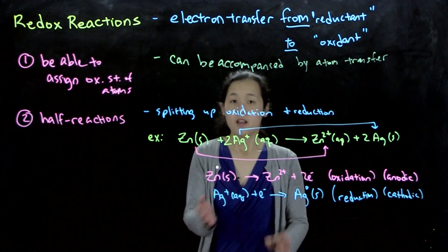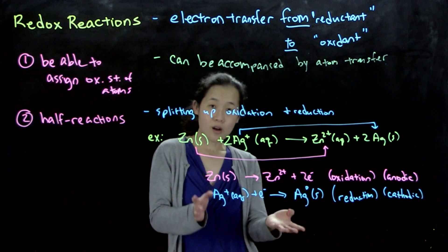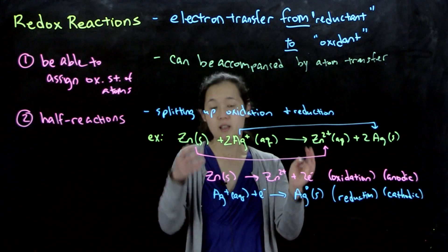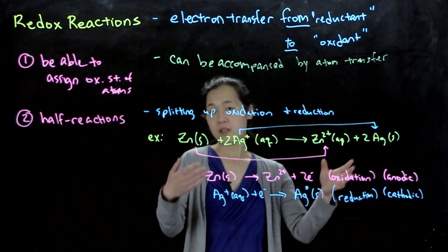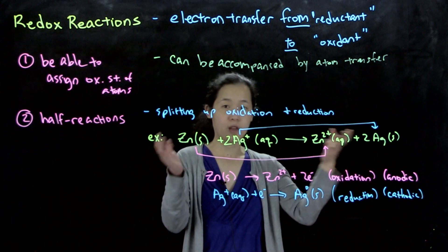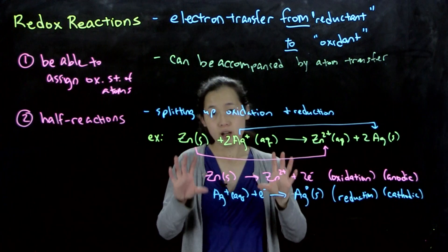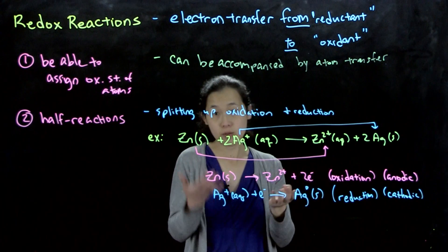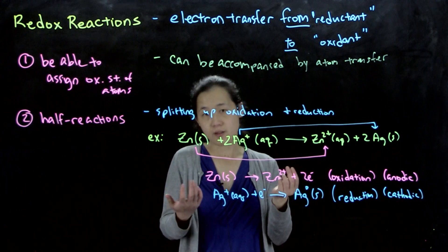So again, these half reactions aren't real things by themselves. You can't consider a half reaction by itself. An oxidation must be accompanied by a reduction to form a full reaction. These are only conceptual ways of mapping a reaction so we can keep track of our electrons and of our potentials later on.